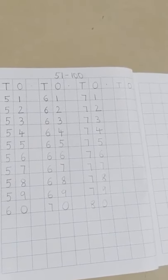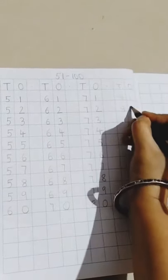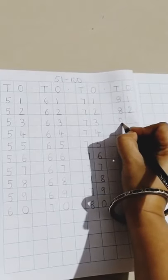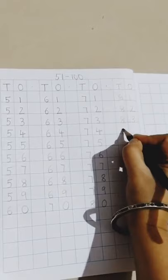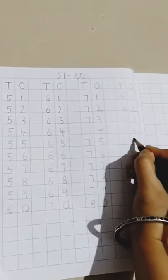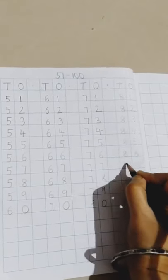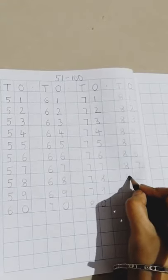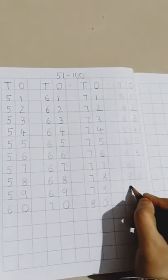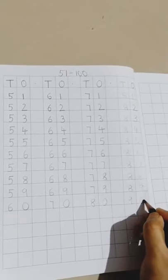Now moving on to the fourth line. We are going to write 81 to 90. 81, 82, 83, 84, 85, 86, 87, 88, 89, 90.